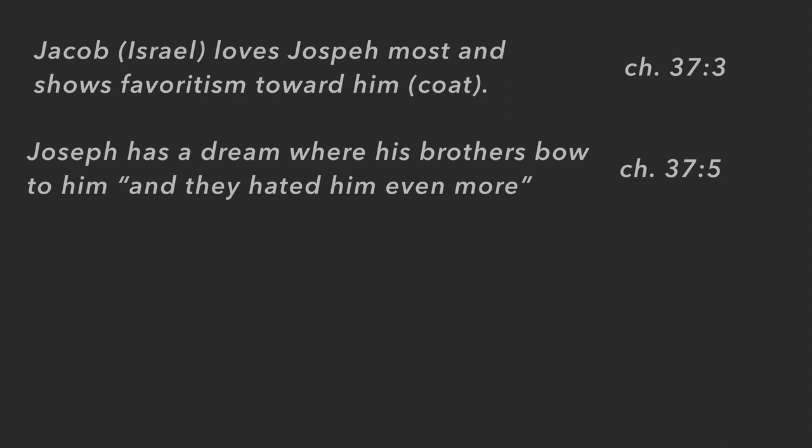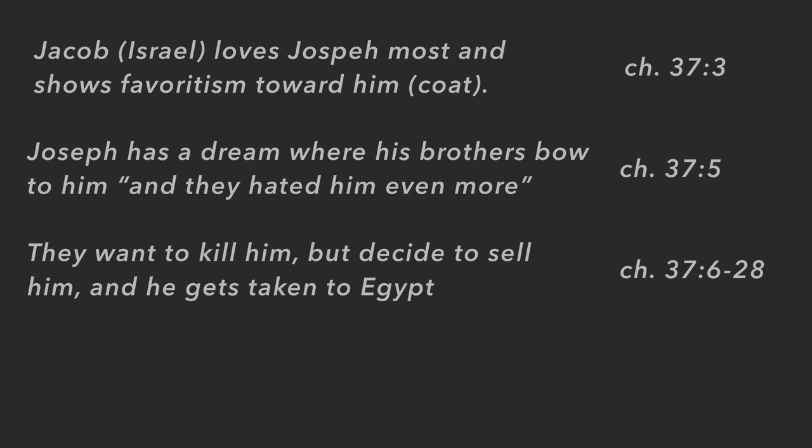Another important event: Joseph receives a dream. His brothers don't like it because Joseph says, essentially, 'I had a dream and all of you are bowing down to me.' The text says they hated him even more. He's already daddy's favorite, and now this dream makes them dislike him even more.